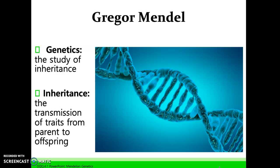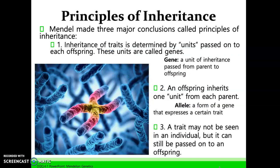Mendel identified genetics as the study of inheritance. Inheritance is the transmission of traits from parent to offspring. Mendel made three major conclusions called the principles of inheritance. The first conclusion was that inheritance of traits is determined by units passed on to each offspring. These units are called genes — a gene is a unit of inheritance passed from parent to offspring, and an offspring inherits one unit from each parent. At the time, Mendel didn't have a name for these units; later they were established as genes.